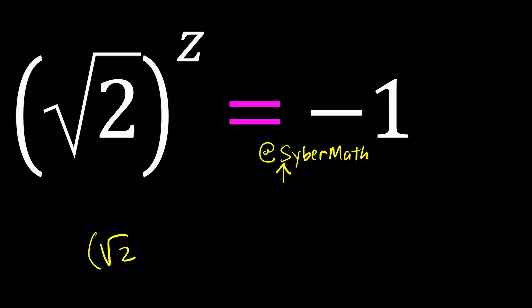That should give us square root of 2 to the power 2z equals 1. Right? Because we square both sides now we have 1. Can we safely say that if z equals 0 then we get square root of 2 to the power 0 equals 1, so z equals 0 is a solution.